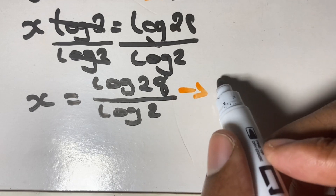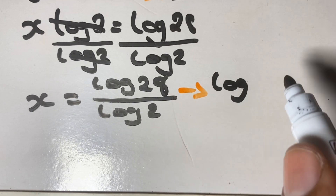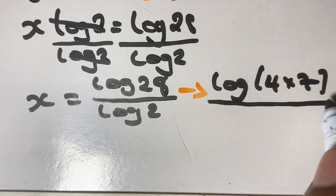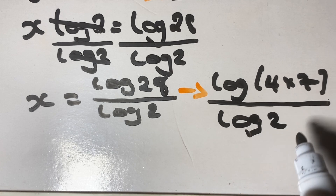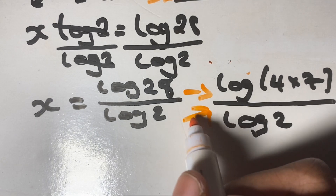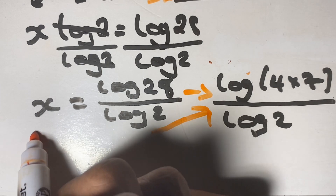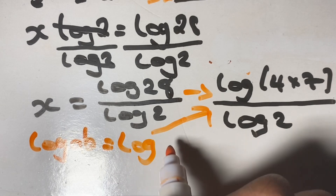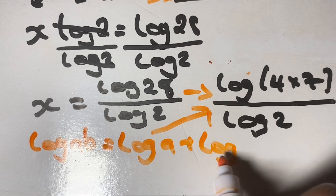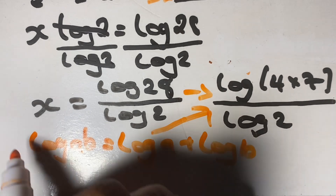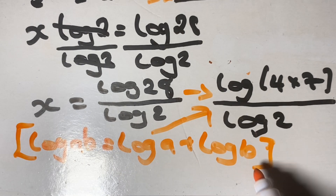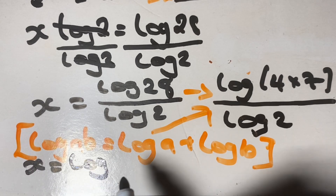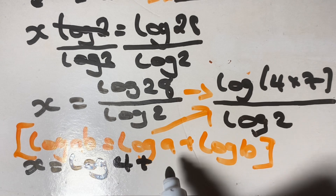To simplify things further, we can split 28 into two factors, 4 and 7, where we now have log of 4 times 7, over log 2. In logarithm, we have a rule that states the log of a times b is equal to log a plus log b. Using this rule, x is equal to log 4 plus log 7, divided by log 2.